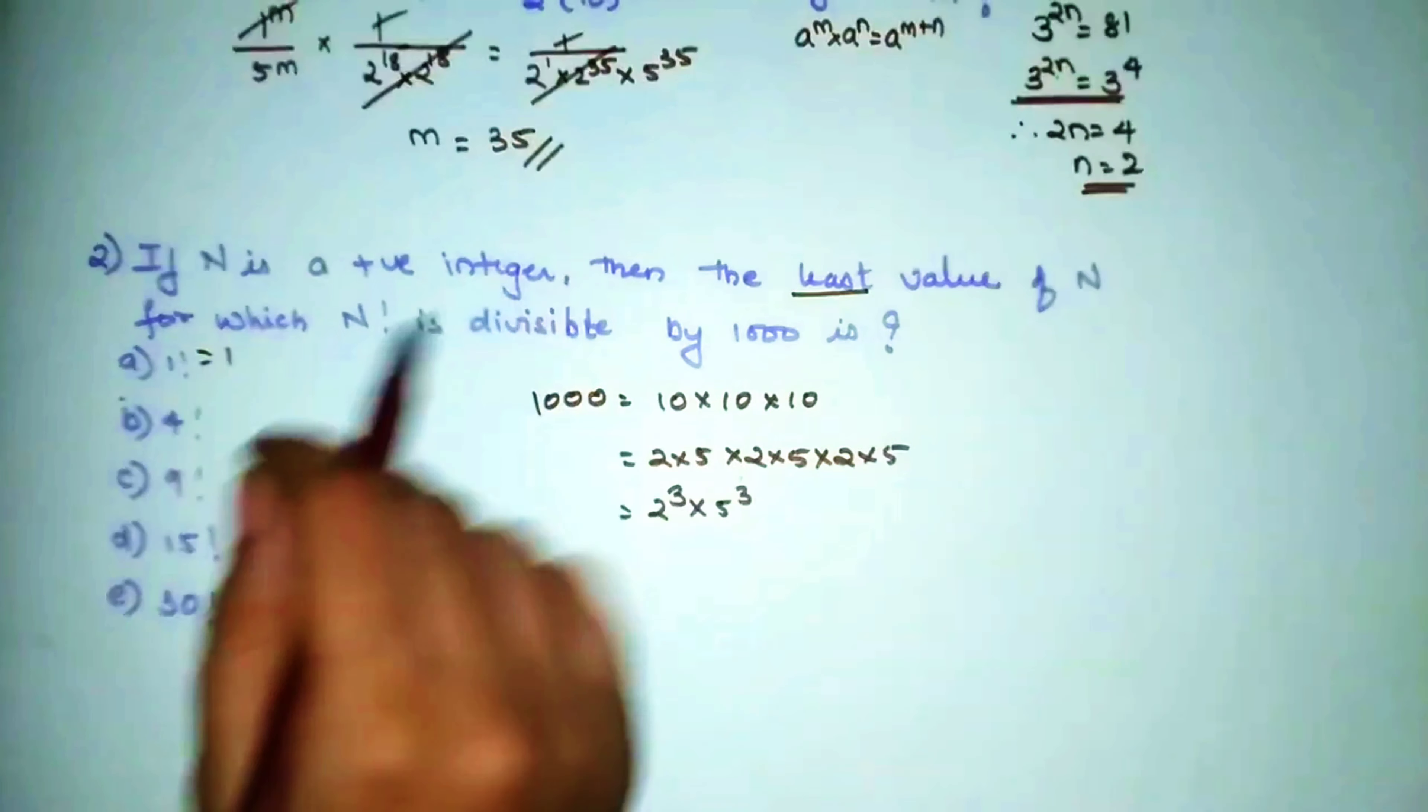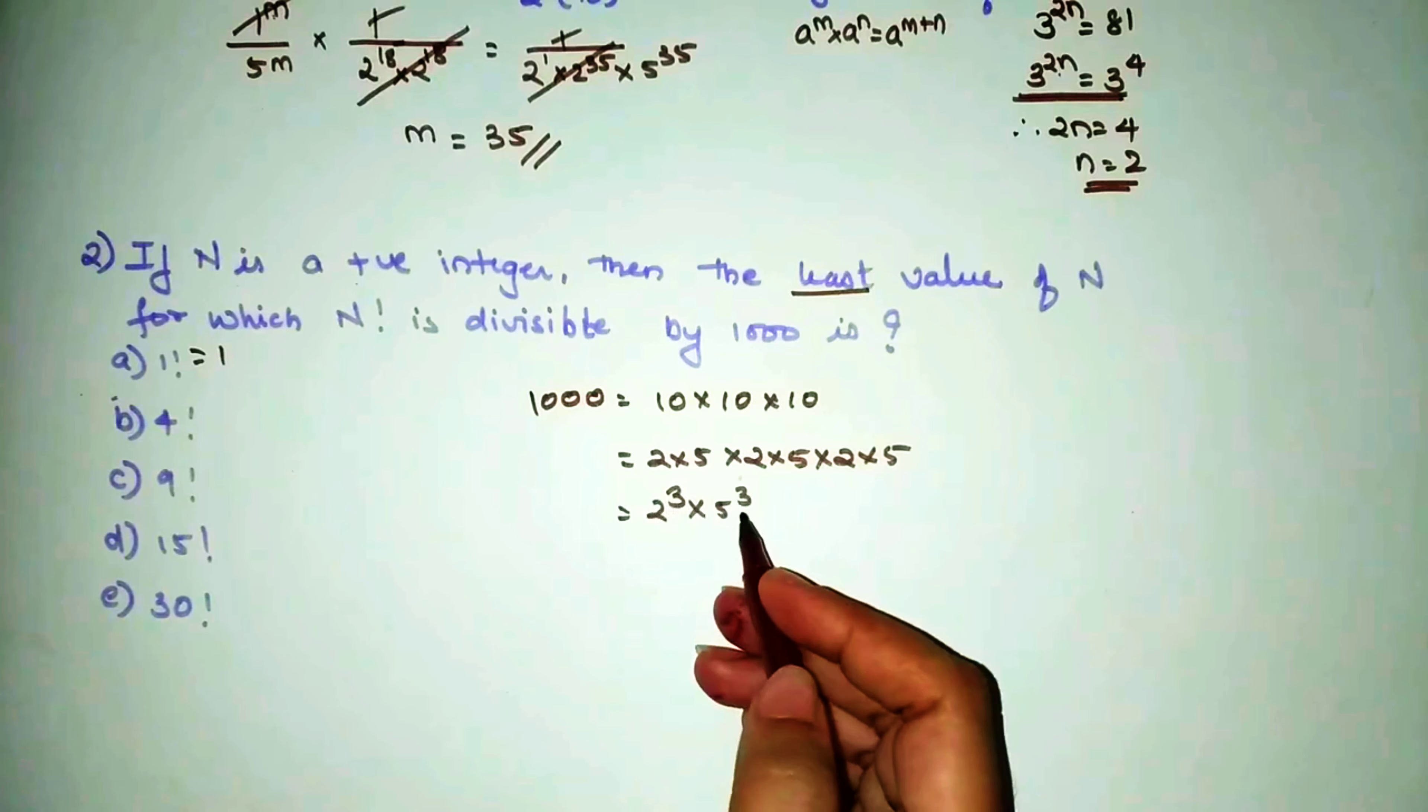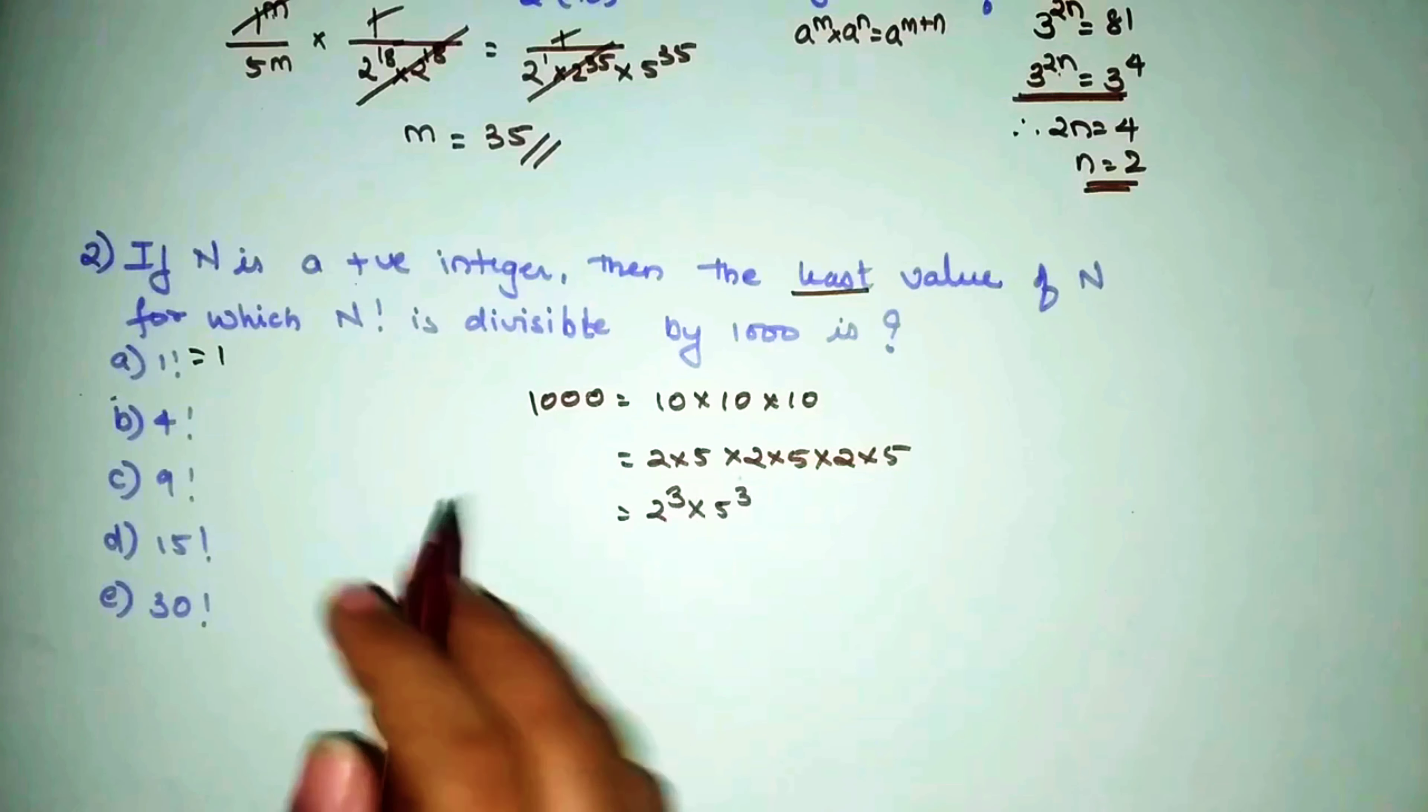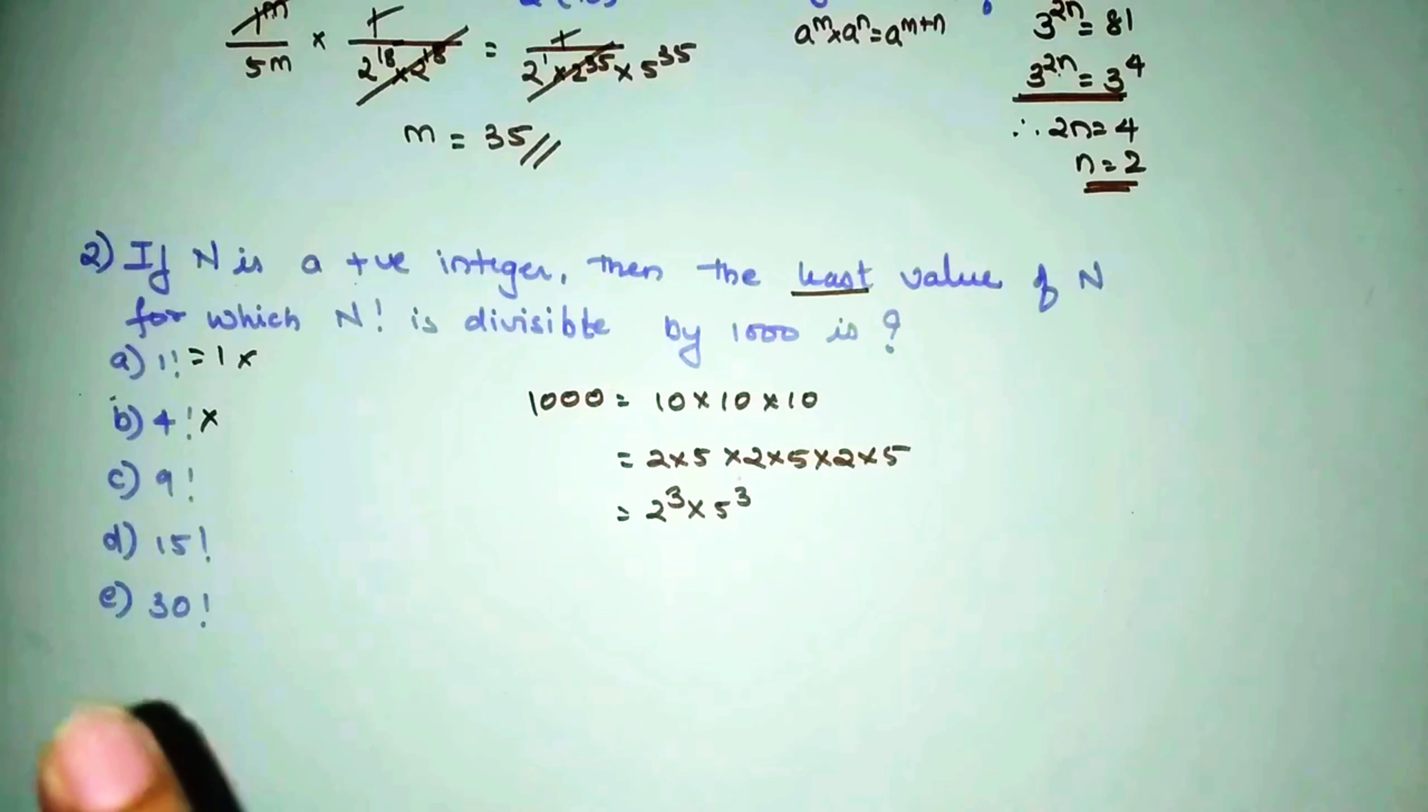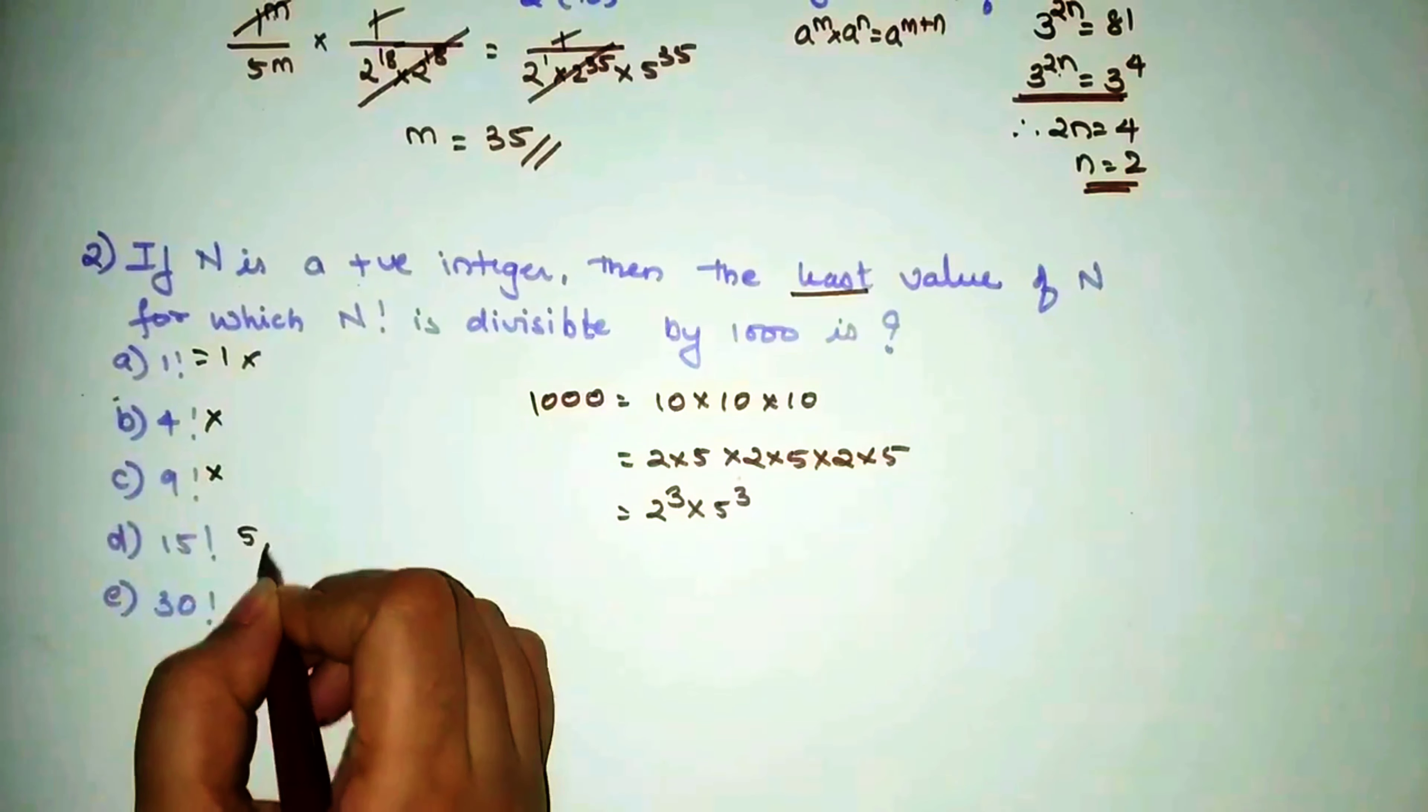Don't start from the biggest number because there you will make a mistake. So 1 factorial is 1, that is not going to be possible. Now 4 factorial can solve this 2 cube, but it does not have any 5 terms. So we need a factorial which will have 5 term as well, and 2 terms have to be at least mentioned thrice. So I can't take this. Now 9 factorial, the problem is 5 just happens to be coming in 9 factorial only once, and we need it to be coming at least thrice. So here also this is not possible.